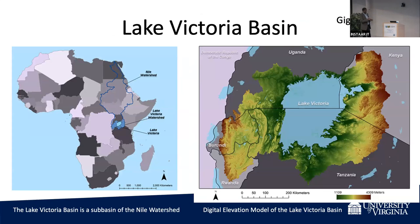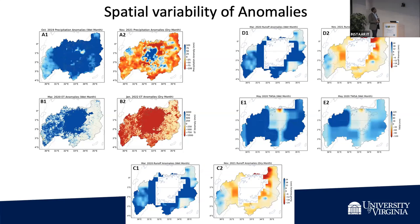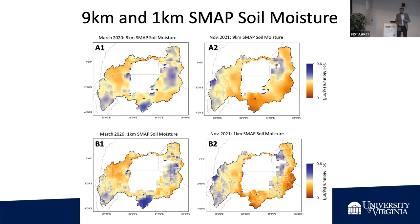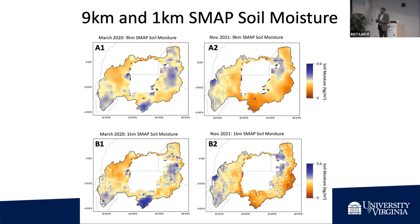Lake Victoria River Basin — and this is not published yet. You can see wet October 2019 versus dry November 2021. You can see the precipitation anomalies, runoff anomalies, ET anomalies, total water storage, and runoff again for another period. At nine and one kilometers, the one kilometer shows so much higher spatial variability of the areas. For local planners, local communities who want to do work in these areas, this is a powerful tool.